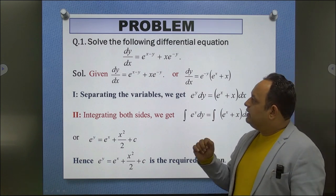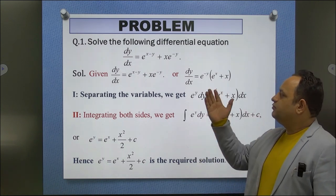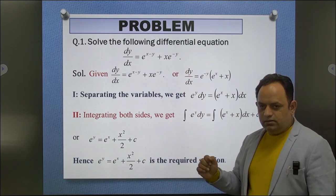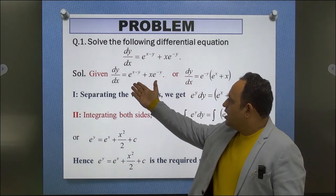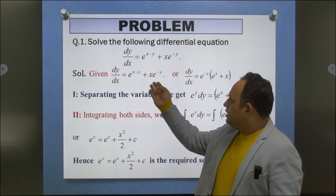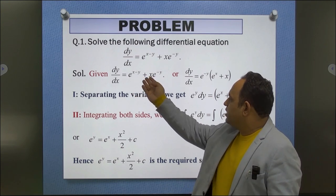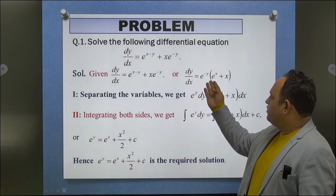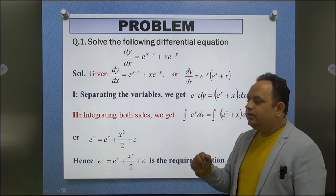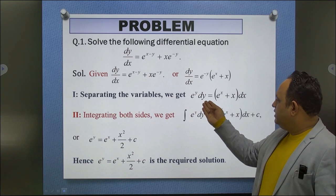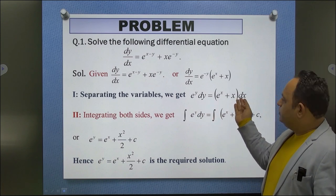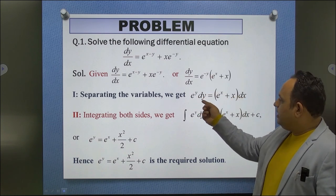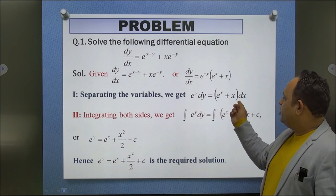Problem: Solve the differential equation dy/dx = e^(x−y) + x·e^(−y). We rewrite this as dy/dx = e^(−y)·(e^x + x). Separating the variables, we get e^y dy = (e^x + x) dx. Here dy is with the function of y and dx is with the function of x.